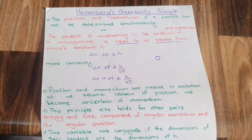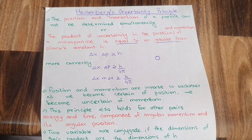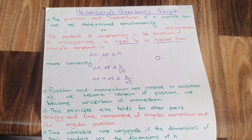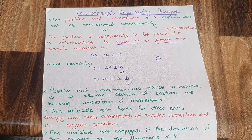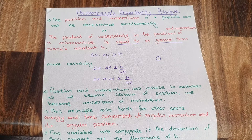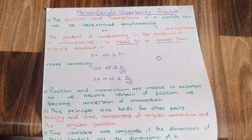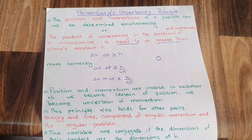Assalamu alaikum. The topic of today's video is Heisenberg's Uncertainty Principle. The Uncertainty Principle says that if we are certain about one quantity, then we become uncertain about another quantity.